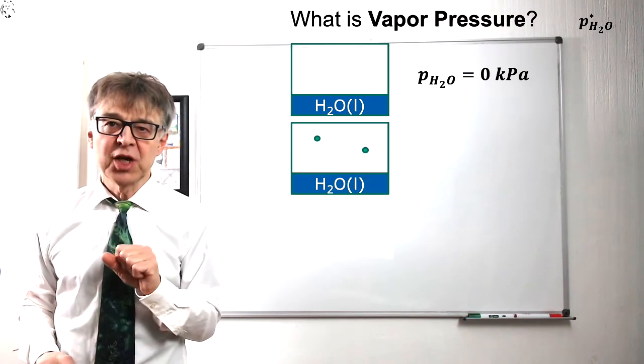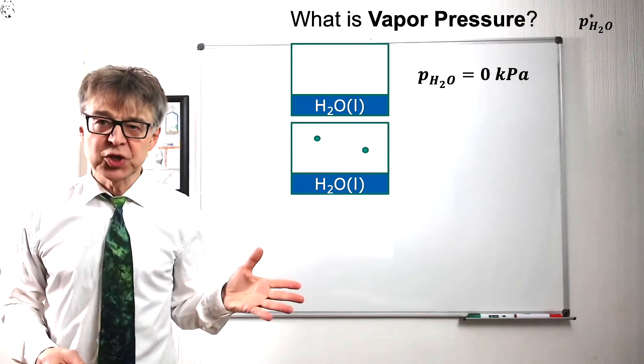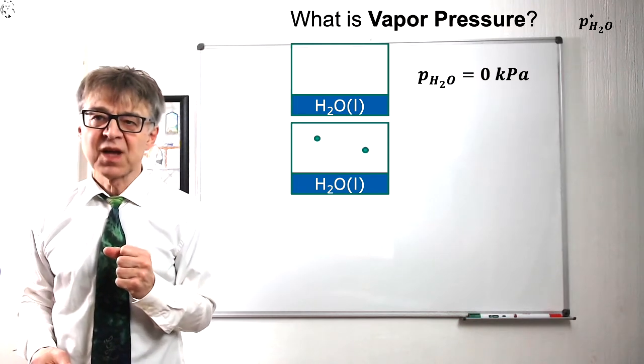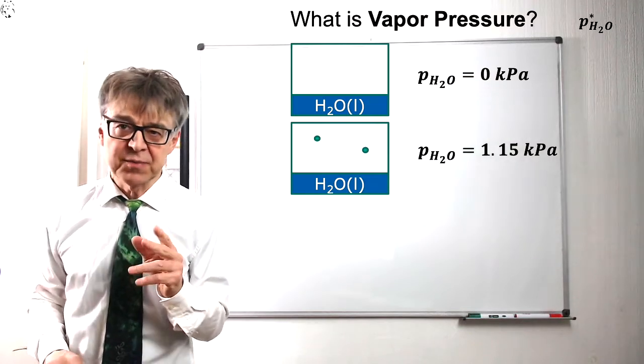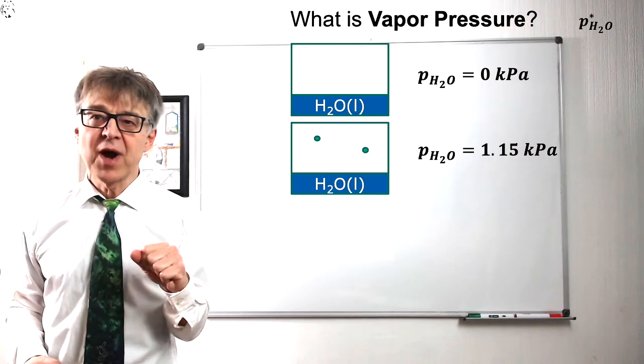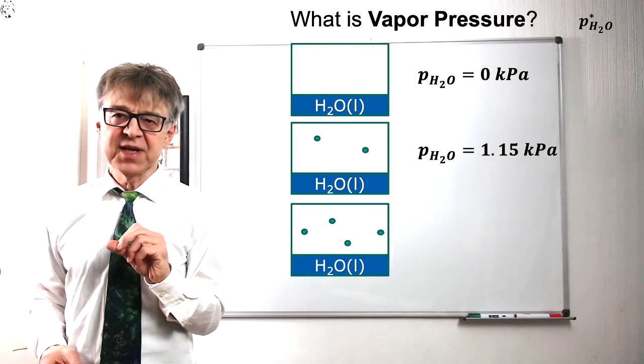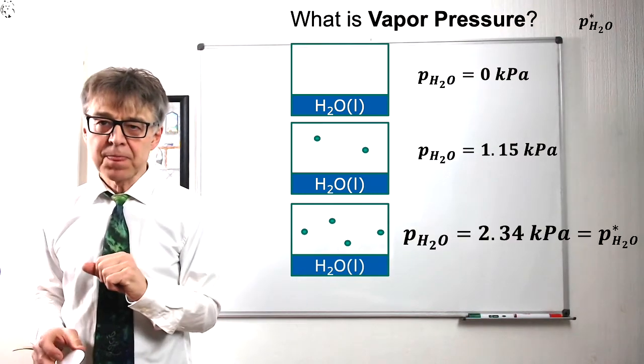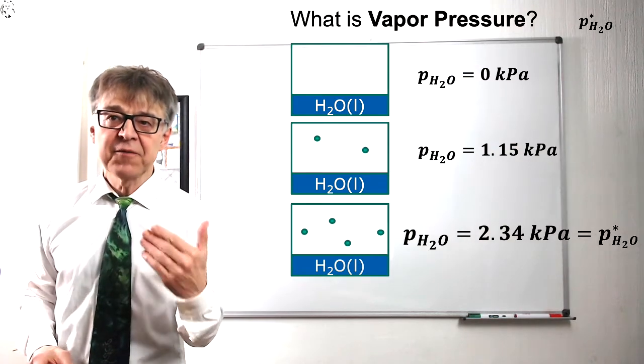Water partial pressure will build up in the gas phase. For example, in this situation, 1.15 kPa. As this state does not correspond to equilibrium yet, water will continue to evaporate. The partial pressure will rise further until at 2.3 kPa the pressure above the liquid phase will remain constant. We are now at equilibrium, in phase equilibrium.